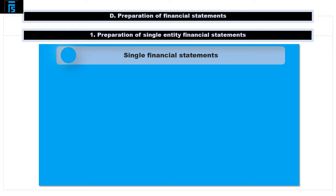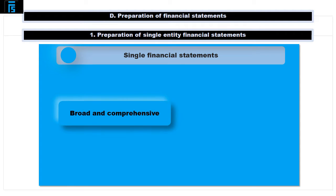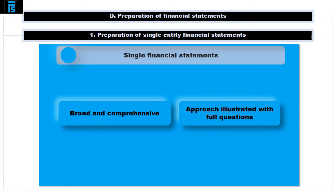The ACCA F7 exam questions which explore the preparation of single entity financial statements tend to be quite broad and comprehensive, and for this reason we will use a slightly modified actual past question, so as to properly illustrate the approach which I recommend that you adopt if such a question does indeed come up on your exam.